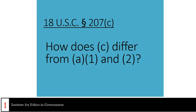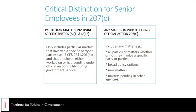How does C differ from A1 and A2? Particular matters involving specific parties are the focus of A1 and A2 — an employee is only restricted from communicating back on specific-party matters they either participated in personally and substantially or that were pending under their official responsibility. For purposes of 207C, the former senior employee is barred from communications and appearances in connection with any matter. Any matter includes all particular matters, whether or not they involve specific parties, broad policy options, new matters not yet under agency consideration, and matters pending in other agencies.